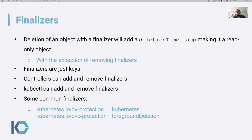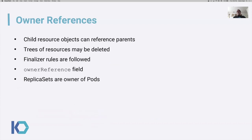Here are some common finalizers that you've probably seen. The ones I certainly come across most often are the PV and PVC protection finalizers. They are there to govern the deletion of the resources that are in the back of Kubernetes — the actual disks themselves and the actual reservations on the disks themselves. There's the Kubernetes finalizer, which is used in namespaces, and there's foreground deletion, which I will allude to a little bit but won't get into in depth.